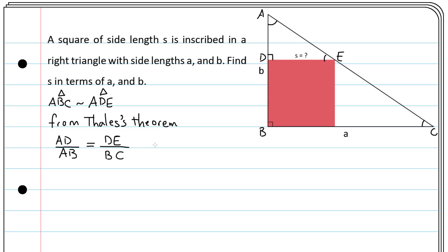But AD is AB minus DB, which is b minus s, and AB is just b. On the other hand, DE is equal to s and BC is equal to a.